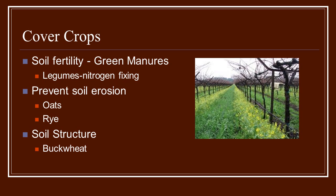Cover crops are a great way to cover several different soil management issues. First, soil fertility — green manures, as they're called, because of their ability to fix nitrogen back into the soil. Legumes are great for that — field peas, alfalfa, and clovers will do that. A cover crop ensures you never have any vacant or open soil where nothing is growing. One problem with bare soil is that erosion can happen, and with heavy rains the water will take that topsoil right off into the ditches. Oats and rye are also really good for preventing soil erosion.